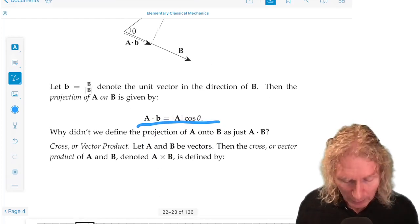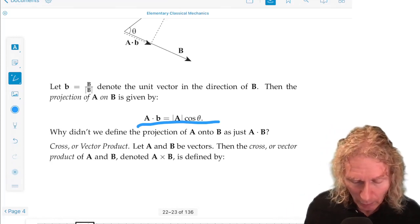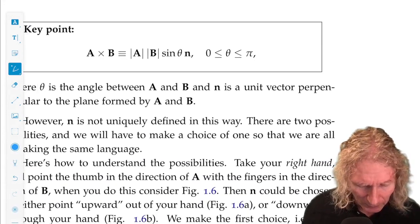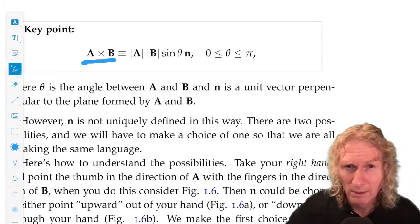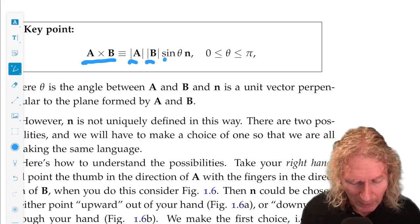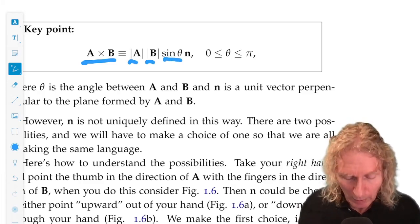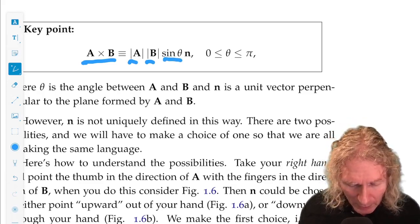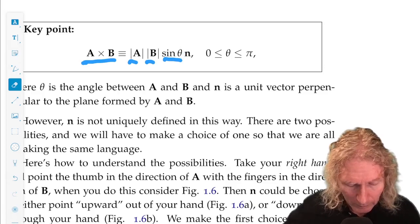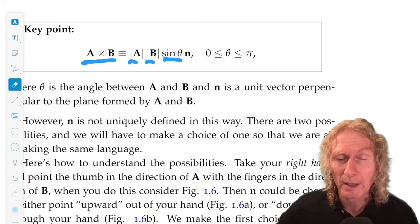Now we come to the cross product, or the vector product. We take our two vectors a and b, and we denote the cross product by a cross b, and this is a little more subtle here. It's the magnitude a, magnitude b, times the sine of the angle between them. Now it's a wrinkle, it's where it's a vector product, multiplied by a unit vector, lowercase n, that's perpendicular to the plane spanned by a and b.